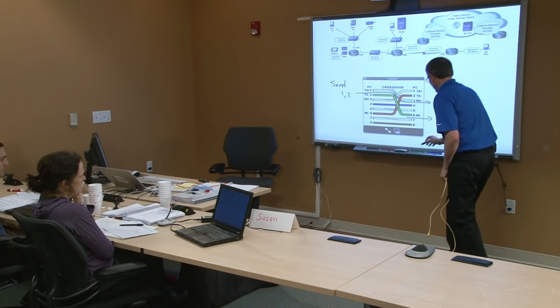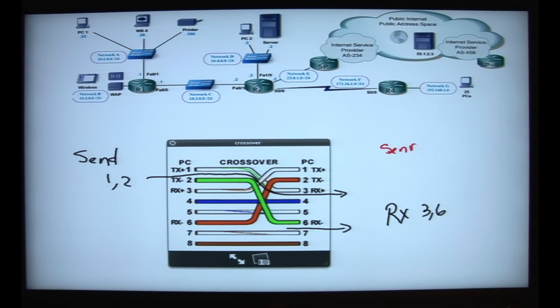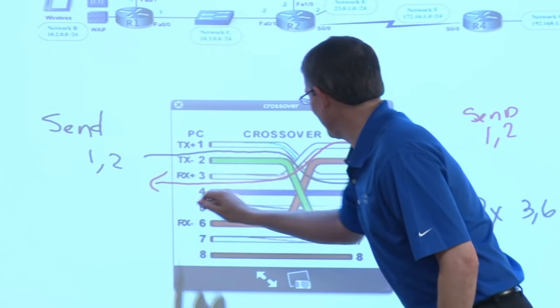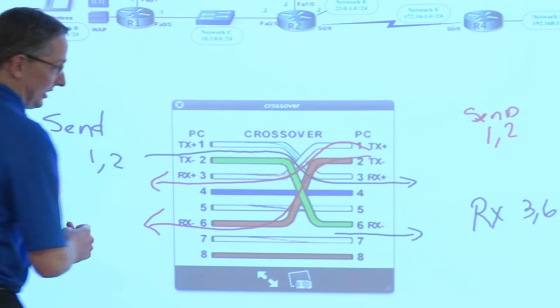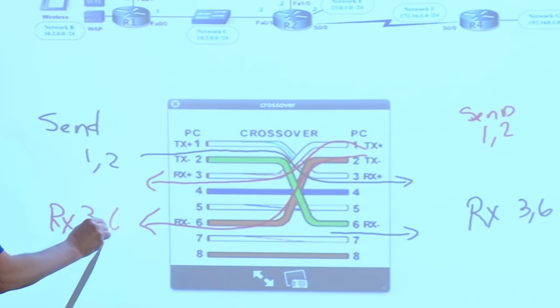Let's follow it the other direction in a different color for effect. So this PC is sending on pins one and two. Ready for this? Pins one and two come out on three and six. And fortunately, because that's what PCs use for a living, this guy receives on three and six.